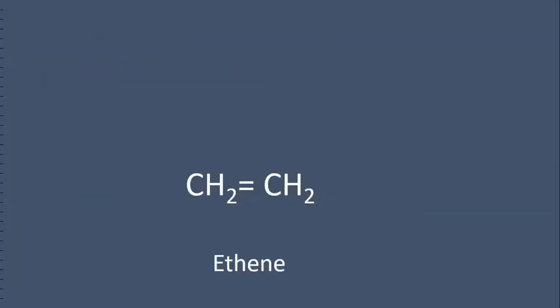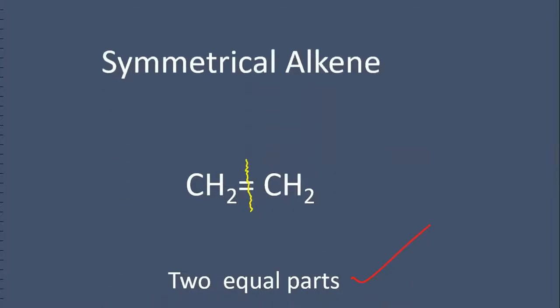This is ethene. At the ethene, at the double bond part, we get two equal parts. This is called a symmetrical alkene.